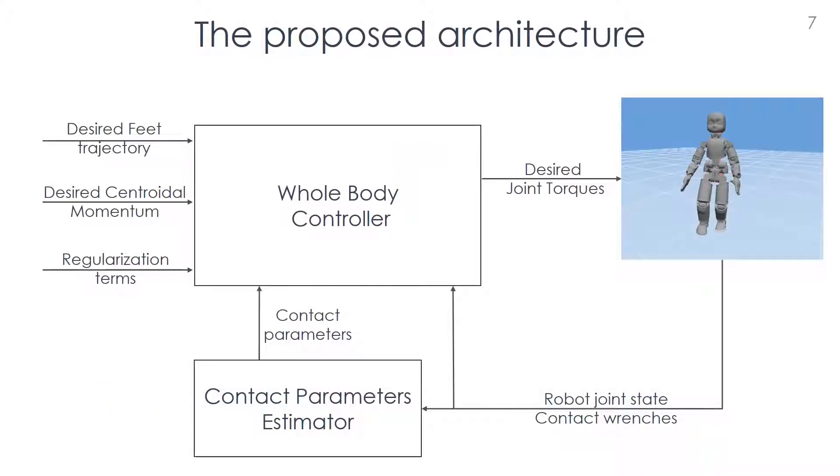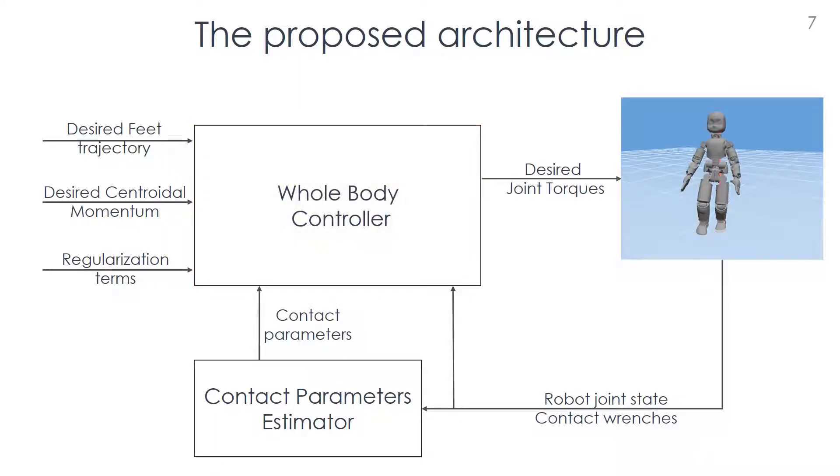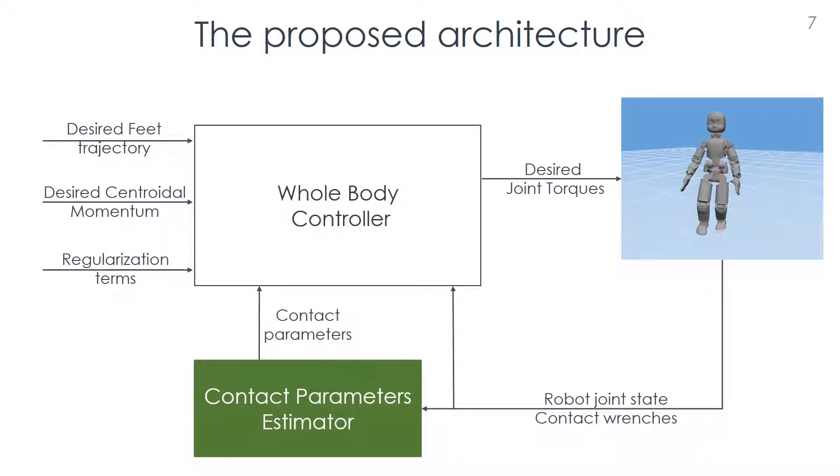The proposed controller architecture consists of two main blocks: the whole-body controller and the contact parameter estimator. The whole-body controller aims to track the kinematics and dynamics quantities considering the robot and the compliant contact models. The main goal of the contact parameters estimator is to implement an observer that identifies the contact parameters used by the controller to stabilize the system.